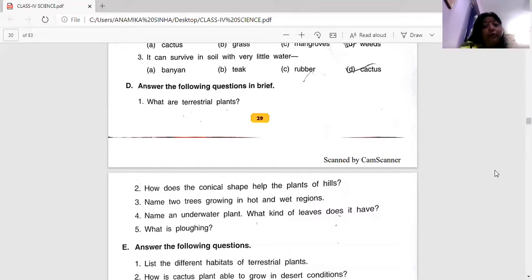Name two trees that are found in hot and wet regions. The hot and wet regions are those regions where we call the evergreen plants. So rubber and coconut can be one of the best examples for the two trees growing in the hot and wet region.